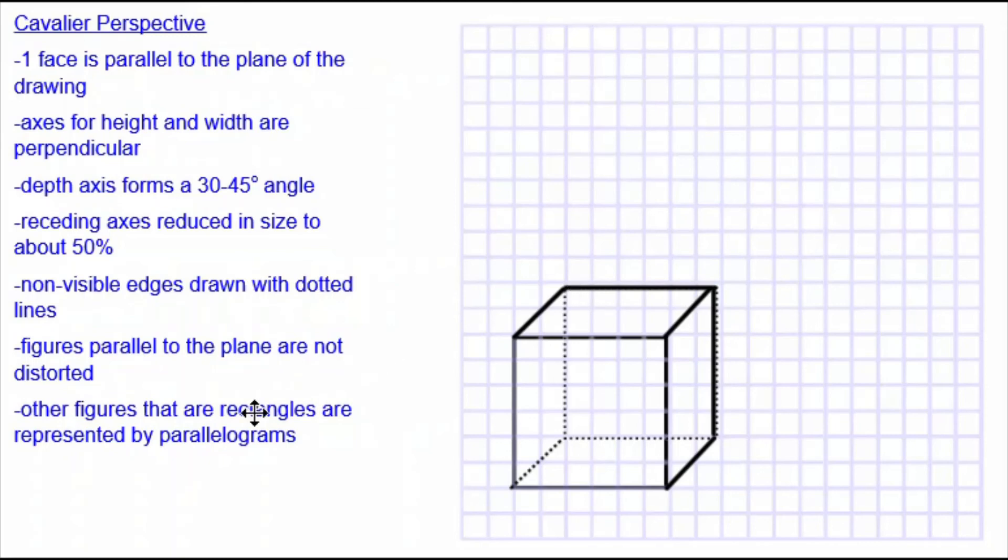But the other figures, which is the other four sides of this cube, the left side, the right side, the top side and the bottom side, all of these are distorted so that they look like parallelograms, but we know they represent squares.